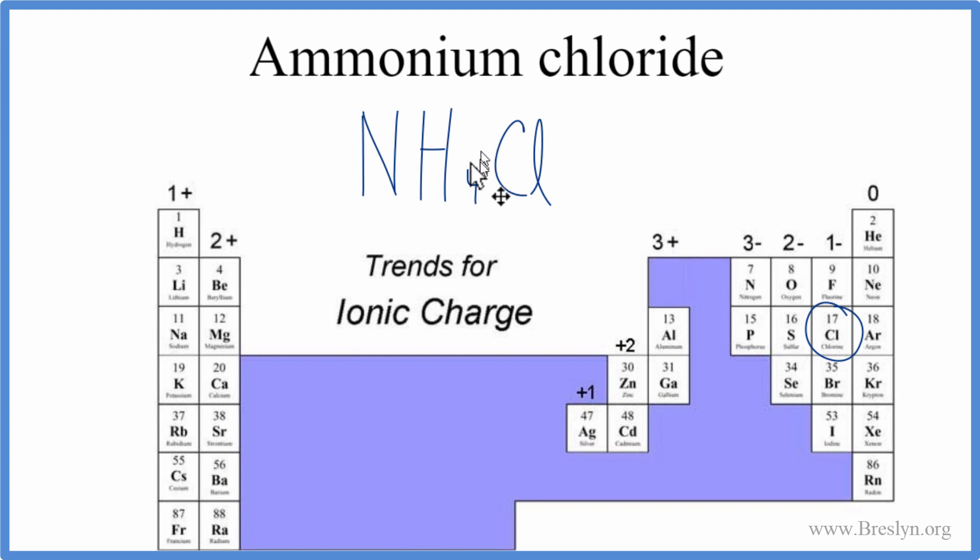One thing to note that's kind of interesting is that NH4, that's a positive ion. And the chloride ion, that's a negative. So we do have two ions. That makes this an ionic bond. But within the NH4, within the ammonium ion, the hydrogens are covalently bonded to the nitrogen.